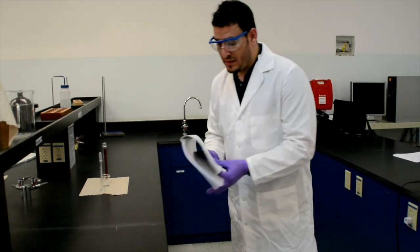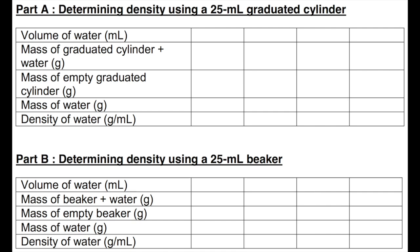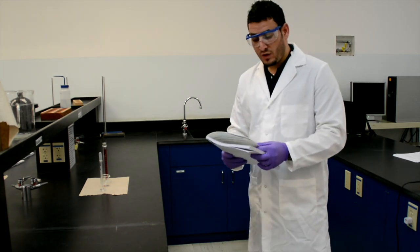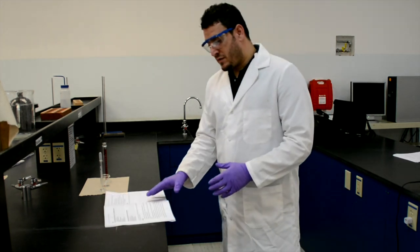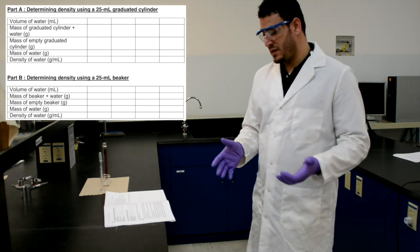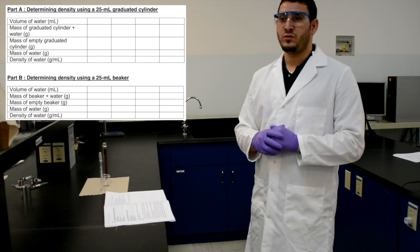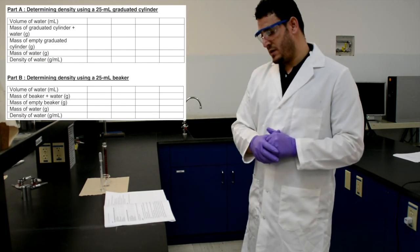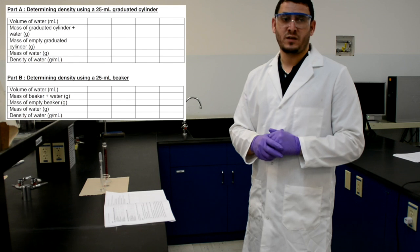In your lab manual, you have two tables where you will fill in your measurements and data. You need to record the volume of water, the mass of graduated cylinder plus water, and the mass of the empty graduated cylinder, then subtract to get the mass of water and calculate the density of water. You do the same for the beaker, and then answer a series of questions in the lab report.